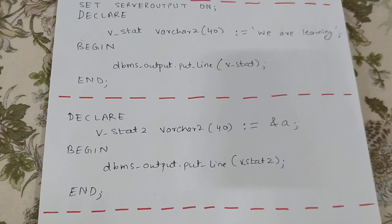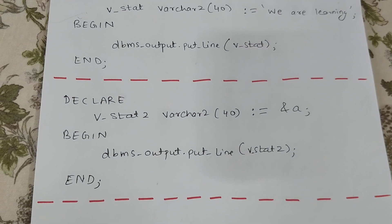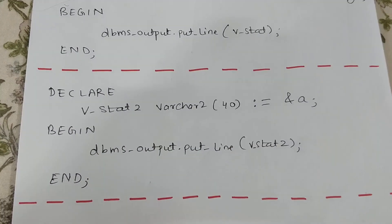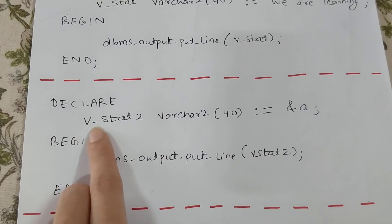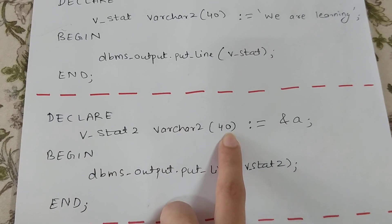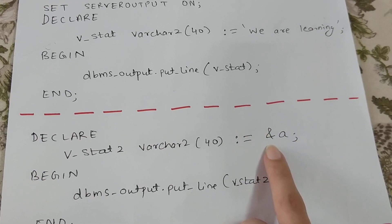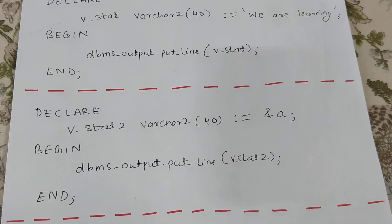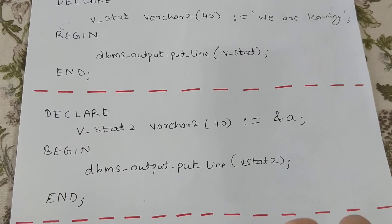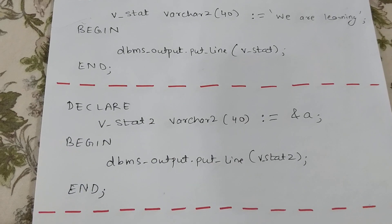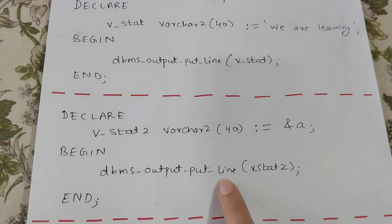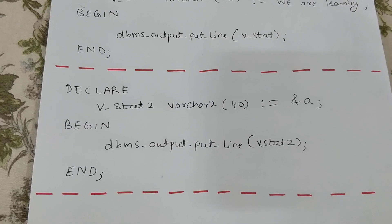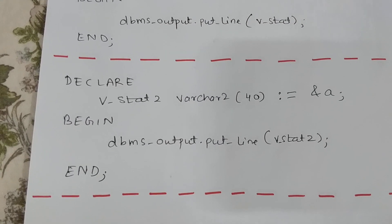The third example shows how to take input from the user using the ampersand symbol. In DECLARE we write v_stat2 VARCHAR2(40) := &a. Whenever you write ampersand followed by a name, it prompts the user to enter a value, which is then stored in v_stat2. Between BEGIN and END we write DBMS_OUTPUT.PUT_LINE(v_stat2) to print it. Thank you for watching — more PL/SQL videos are coming soon, so please subscribe.